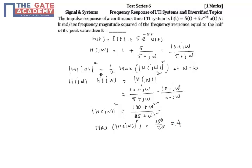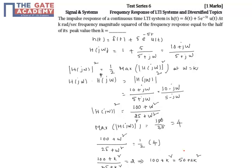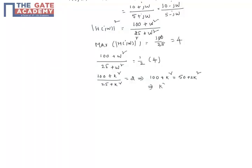Now we equate the two expressions. Setting (100 + ω²)/(25 + ω²) equal to half of the maximum value of 4, which is 2, and substituting ω = k, we get (100 + k²)/(25 + k²) = 2. Solving: 100 + k² = 50 + 2k², which gives k² = 50, therefore k = √50 = 7.07 radians per second.